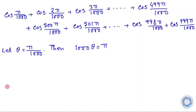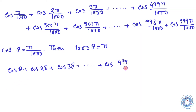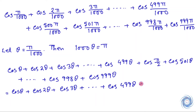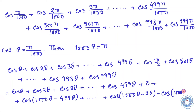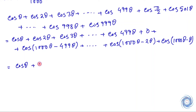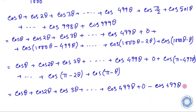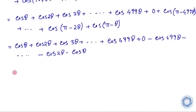Then the above expression can be written in terms of theta. Now we will use the fact that 1000·theta equals π, and from here we derive further simplifications, ultimately reducing the expression step by step.